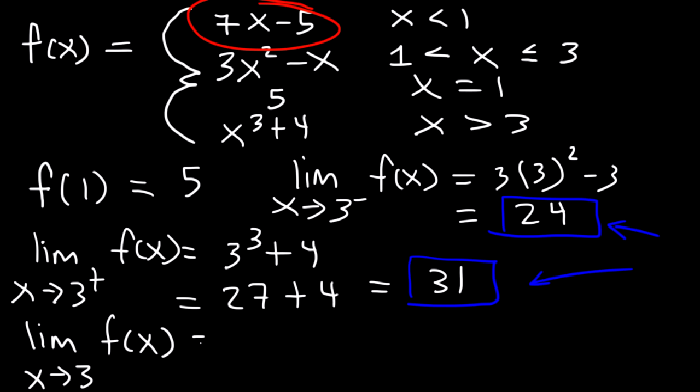What is the value of f(3)? To find f(3), we use 3x squared minus x, because x is less than or equal to 3 for that piece. When we plug in 3, we get 24. So f(3) equals 24.